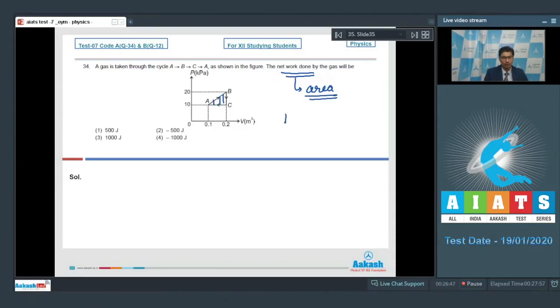The area will be half into base, that will be 0.1 meter cube, into height, that will be 20 minus 10, that is 10 kilopascals that will be 10 to power 3 also. On solving this expression, this will be equal to 500 joules. And therefore, answer 1 for this question is the correct answer.